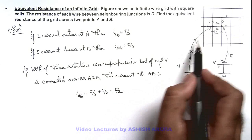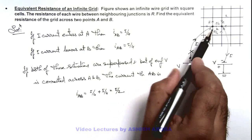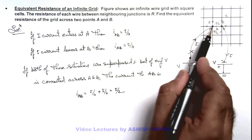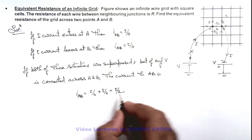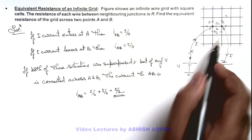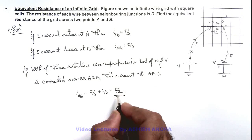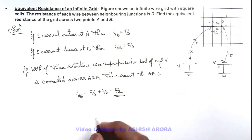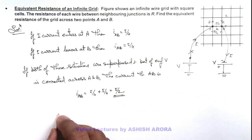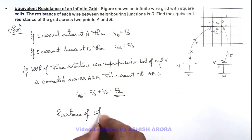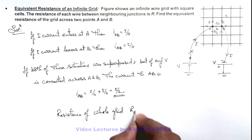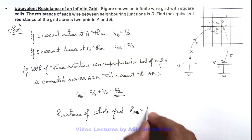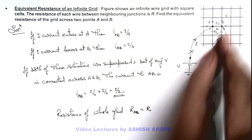So if the current I is distributed in such a way that in wire AB a current I by 2 is flowing, that means through rest of the grid also the current flowing is I by 2. So here in this situation we can write the resistance of whole grid across terminals R_AB can be written as resistance of terminals A and B.